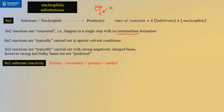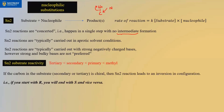For SN2 substrate reactivity: if your substrate is methyl, it has the highest reactivity; if it's tertiary, it has the least reactivity. A carbon with zero hydrogens is tertiary, one hydrogen is secondary, two hydrogens is primary, and three hydrogens is methyl. We won't focus much on methyl since there's only one possibility — we'll focus our attention on primary, secondary, and tertiary.